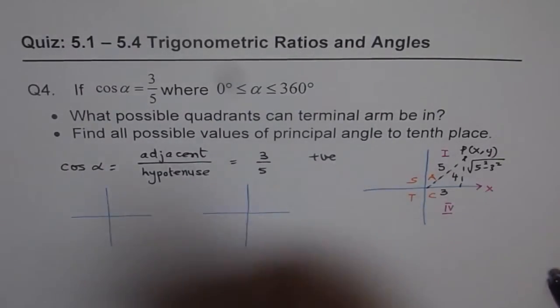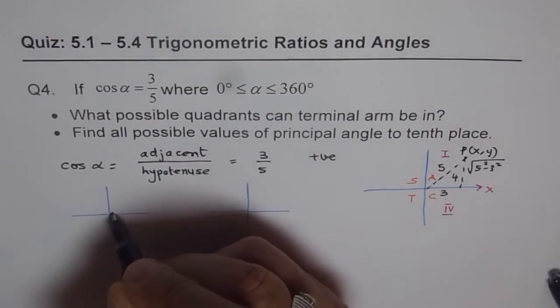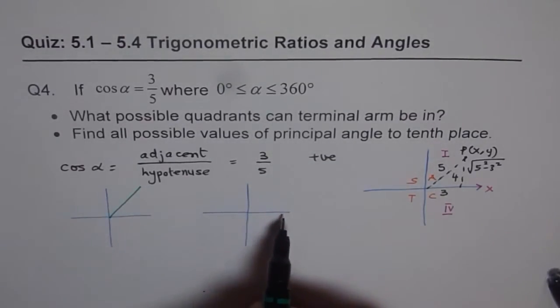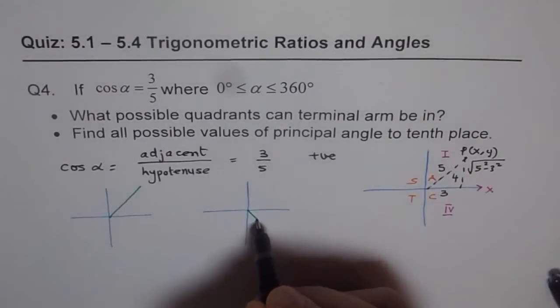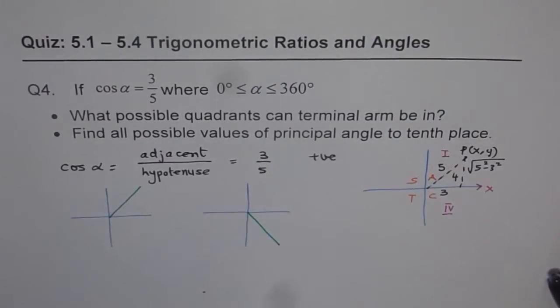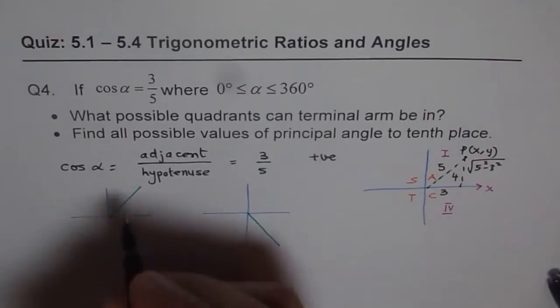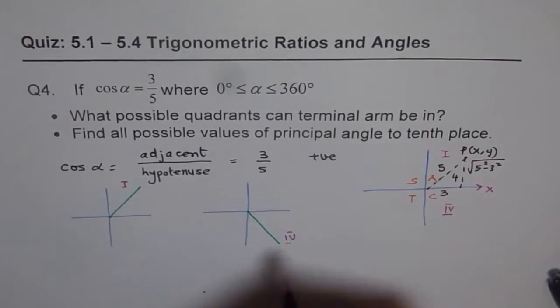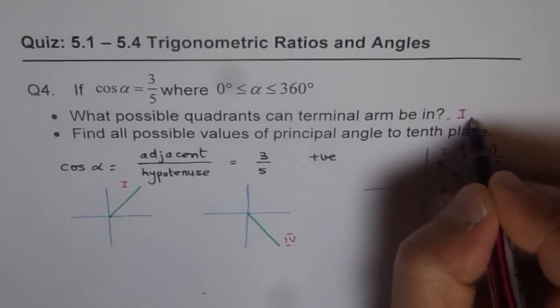Now first is, all are positive in quadrant 1, correct? Now cosine to be positive, x has to be positive, that is the key thing. So that is quadrant 4. So these are the two possible quadrants. So we say quadrant 1 and quadrant 4 is our answer, right? So we get this as 1 and 4.